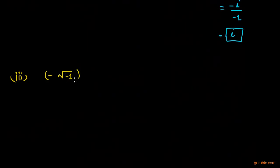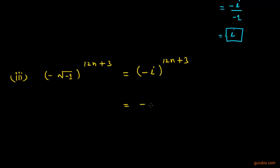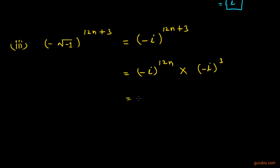In the third part, we are given negative square root of negative 1, raised to (12n + 3). We know that we can write it as negative iota raised to (12n + 3), which equals negative iota raised to 12n, into negative iota raised to 3.